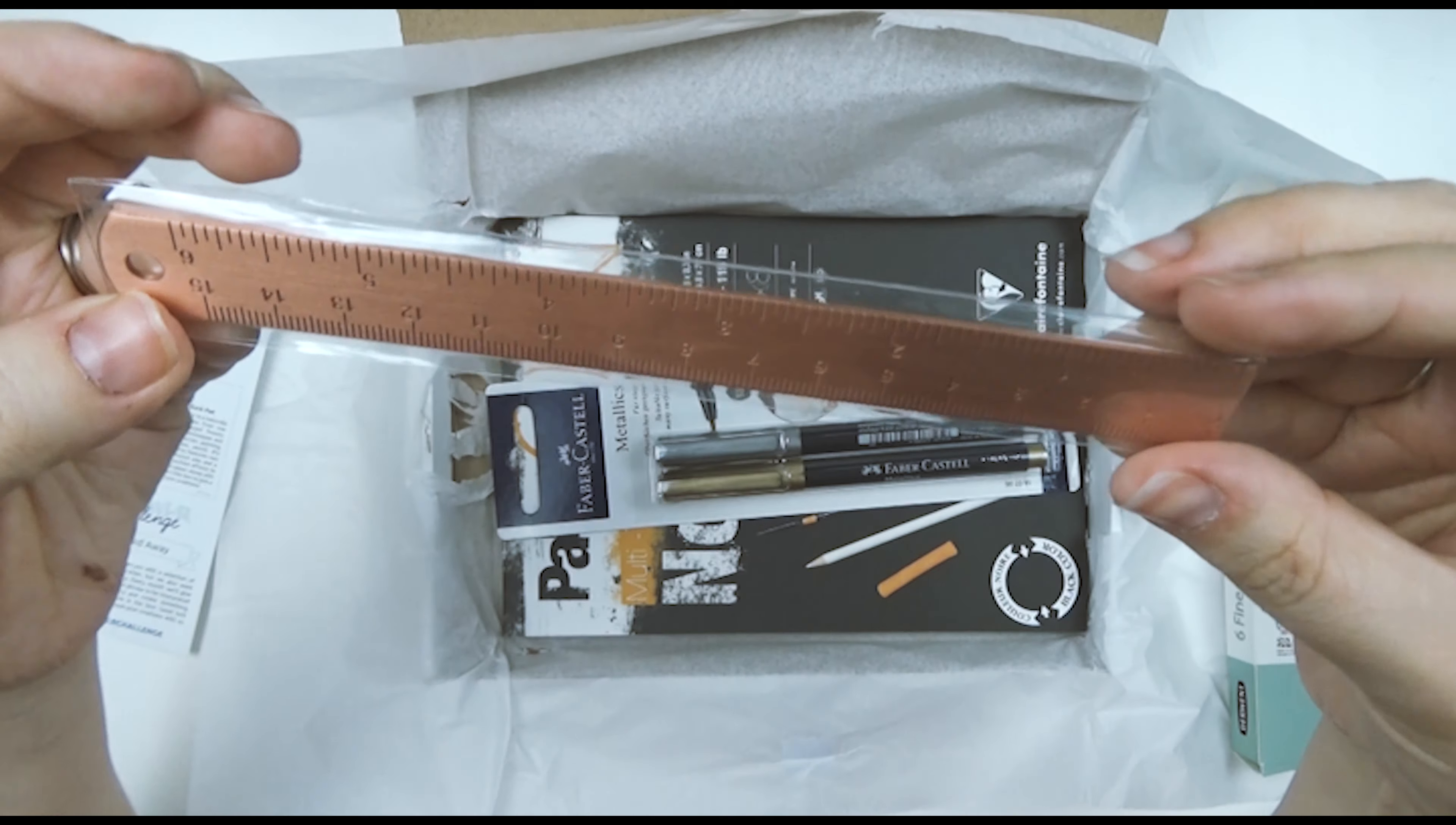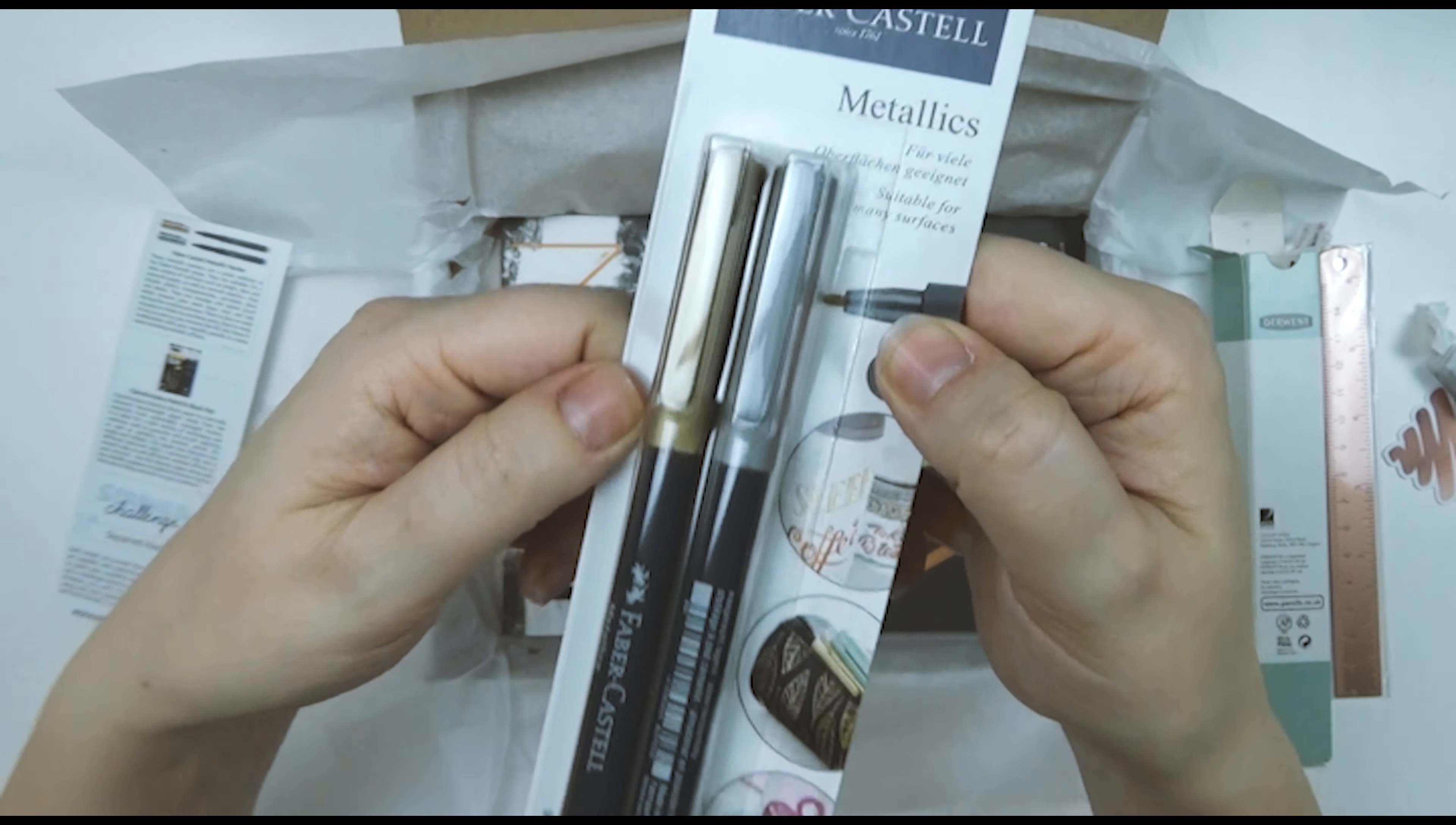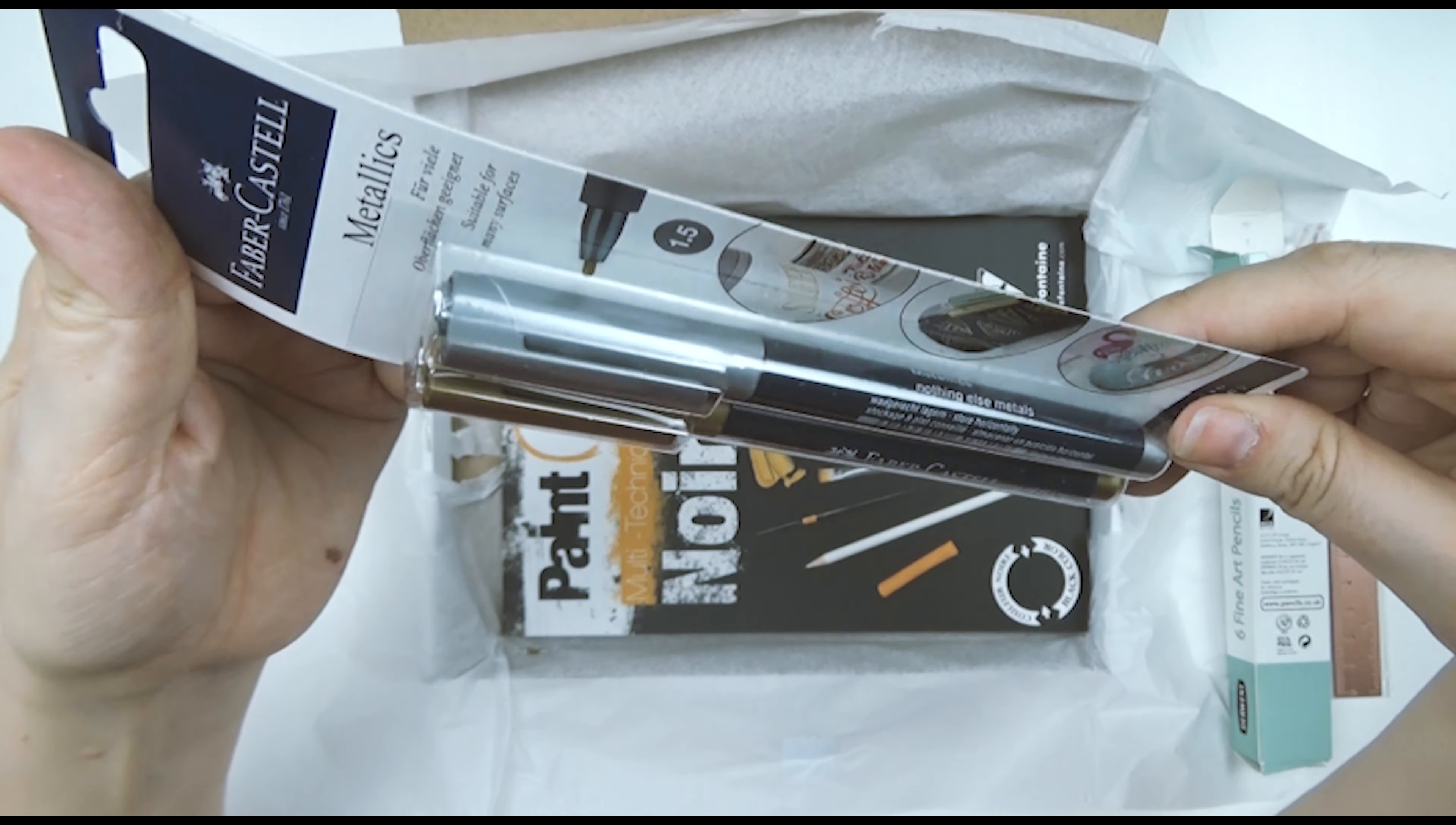A nice rose gold metal ruler. And these Faber-Castell metallic pens. I don't know if they're felt tips or paint pens, but I guess we'll find out together.